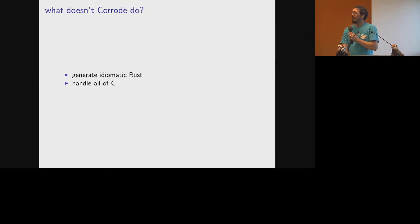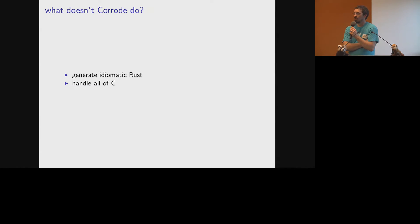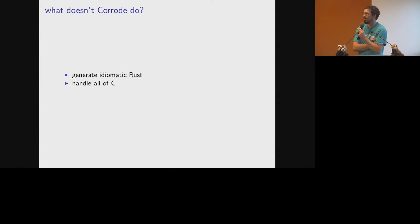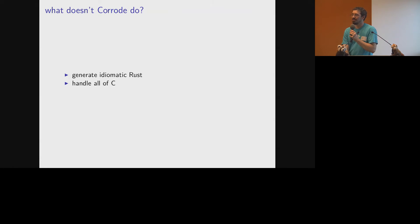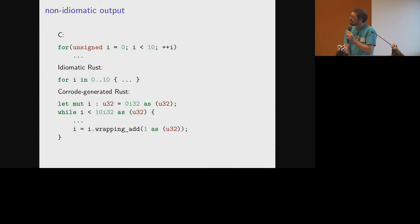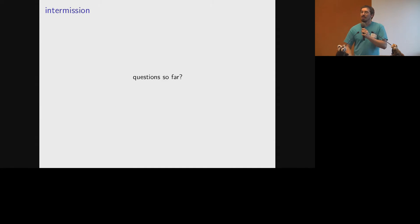The other thing Corrode doesn't do yet is translate all of C. There are constructs it just won't touch right now - it won't handle switch statements at the moment, for the same reason it doesn't handle goto yet. There's a lot of terrifying control flow things you can do with switch statements. There are other things it either doesn't try to translate and will report an error, or tries and gets wrong. I mostly try to detect if I'm going to get it wrong and refuse, but it's not always perfect at that.